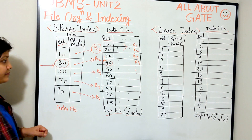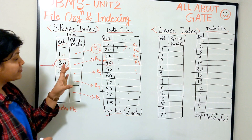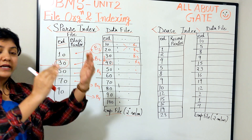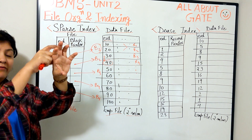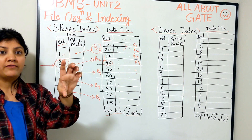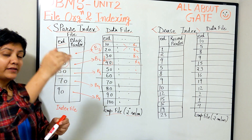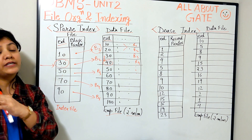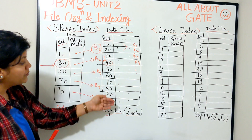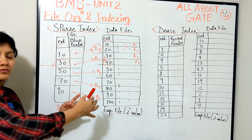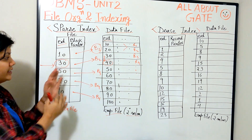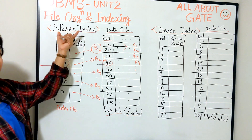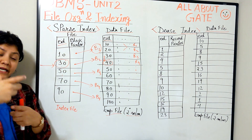A sparse index file is when the file is actually sorted on a certain field, and when you make the index you store one record for each block of your data file. In such a case the index file entries are far smaller than the entries in the data file. You can see here we have far more data entries and very few index entries — in a bigger example the difference would be even more visible.